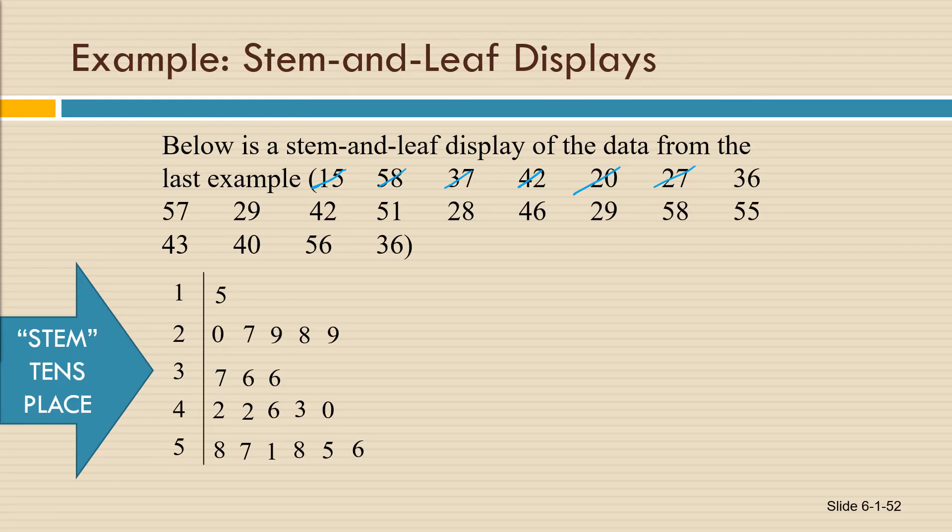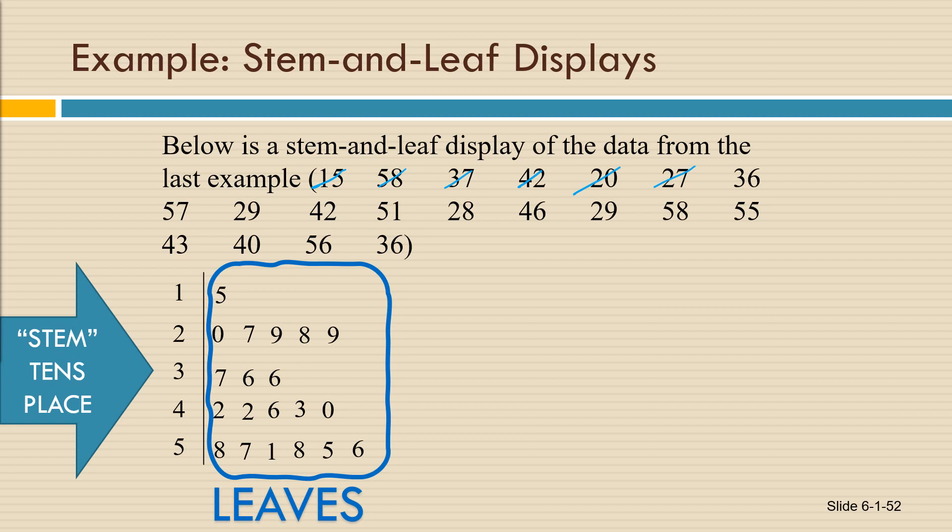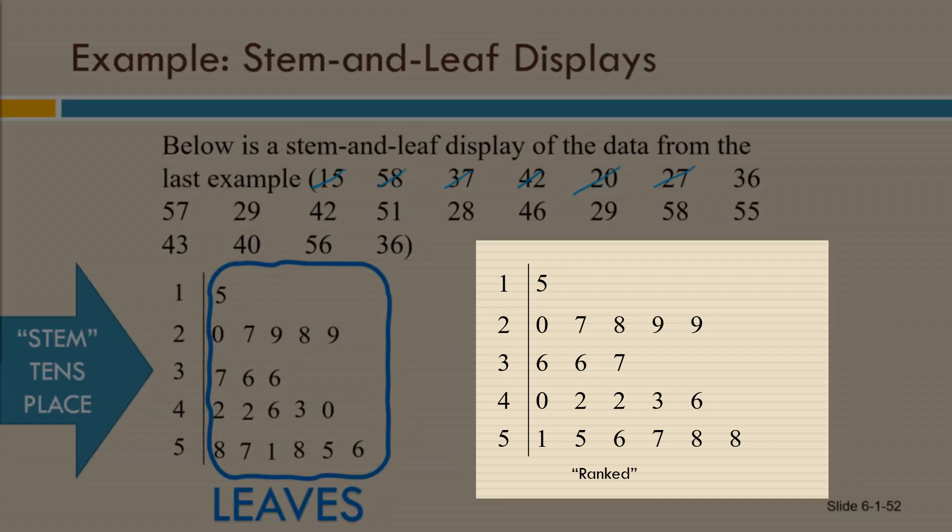We call these ones place digits the leaves, where the tens place digits are the stems. So that's why this is called a stem and leaf display. You can also have a ranked stem and leaf display where the leaves are placed in numerical order. So the stem and leaf display on the right is ranked, and you can see it's the same numbers but placed in numerical order.